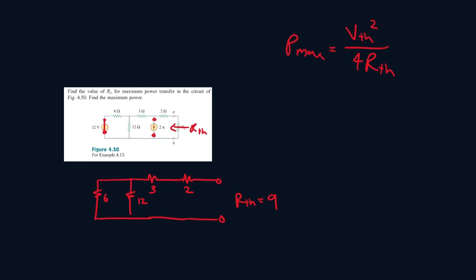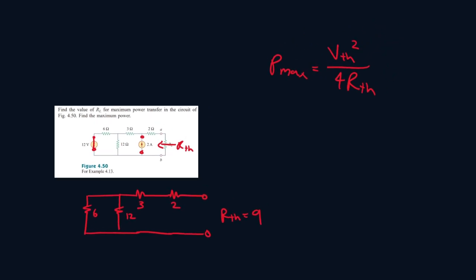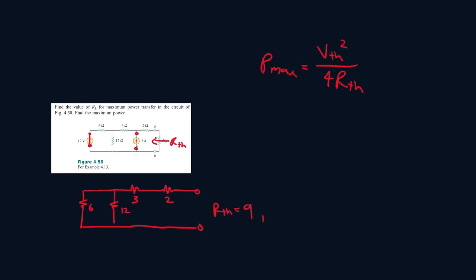Now we have to find the maximum power. This is what RL has to equal for maximum power transfer, so RL has to be equal to 9 ohms. That's the first part done. We can plug RTH into the formula, but we still need to find VTH.